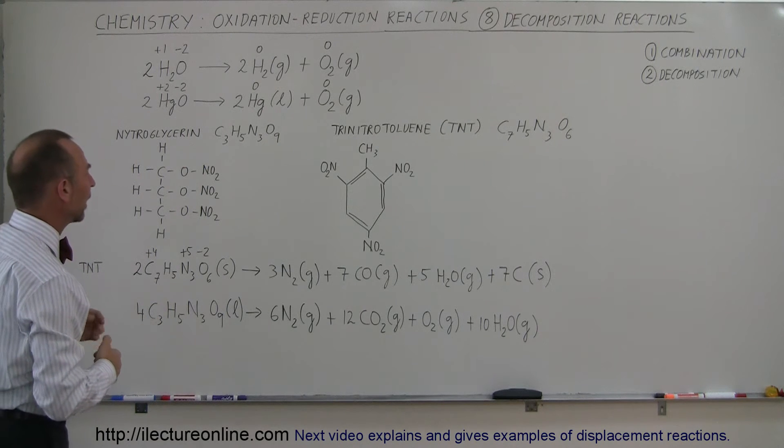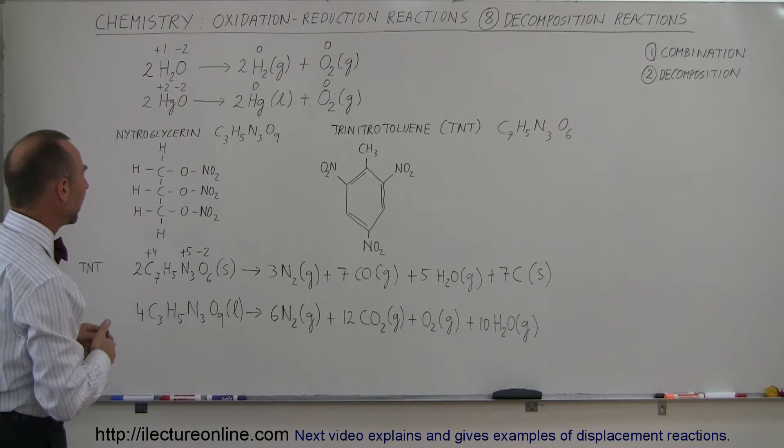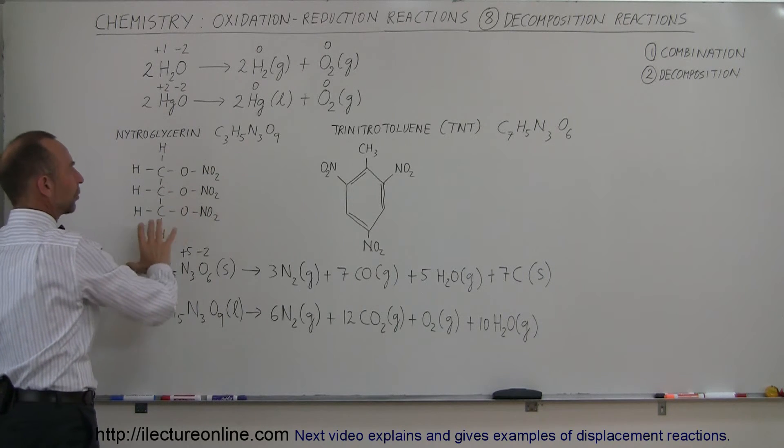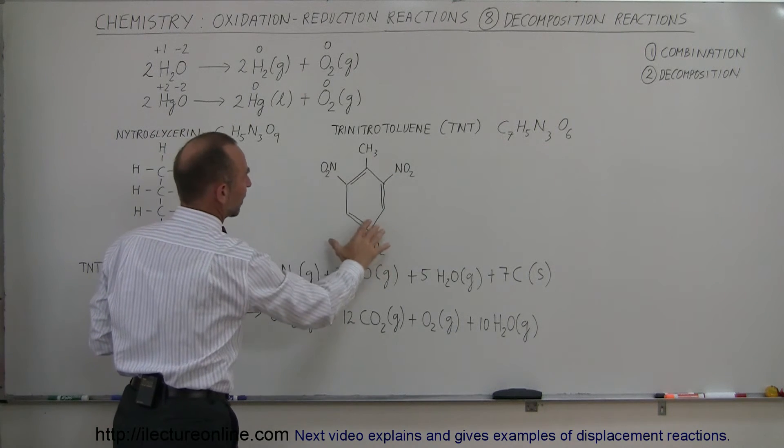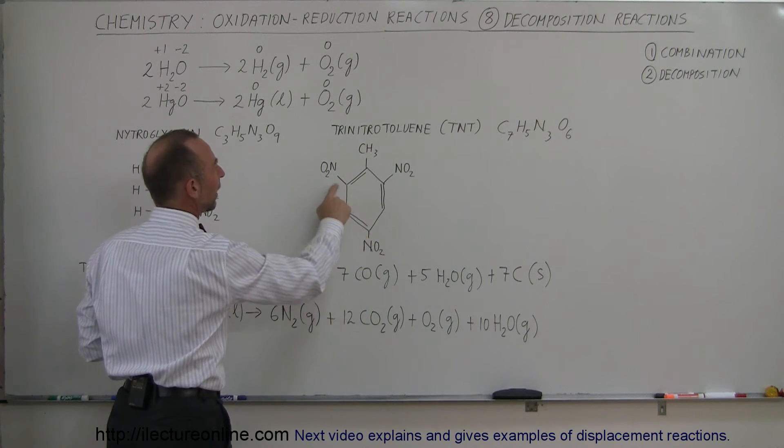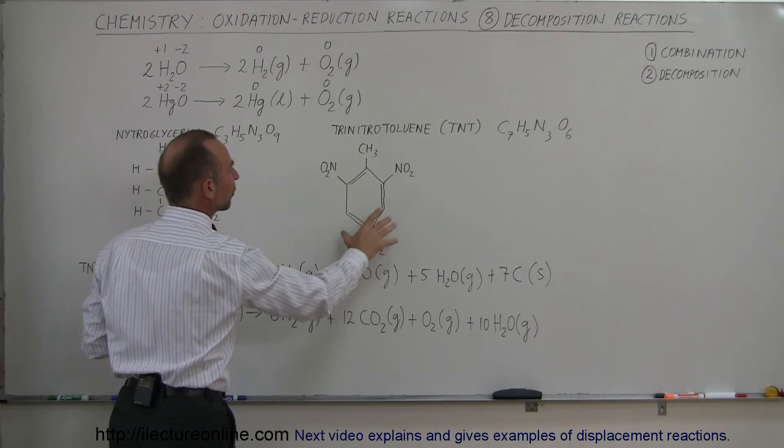The oxygen acts as an oxidizer and is able to separate these molecules. This is the structure of nitroglycerin, here's the structure of trinitrotoluene. Notice how this starts with a benzene ring, has three NO2 attached to it, and one CH3. But when they react and start decomposing into their separate elements,